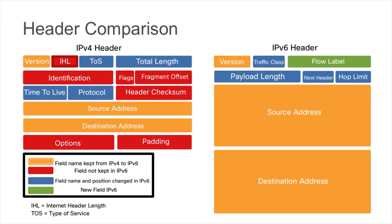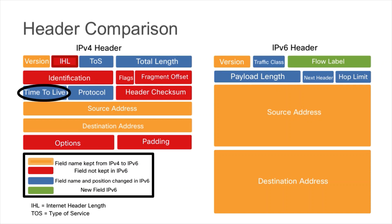In IP version 4 we have a total length field; in IP version 6 that becomes the payload length field — the name and position were changed. We also have a time to live value in IP version 4, which is called the hop limit in IPv6. Both are designed to prevent routing loops.